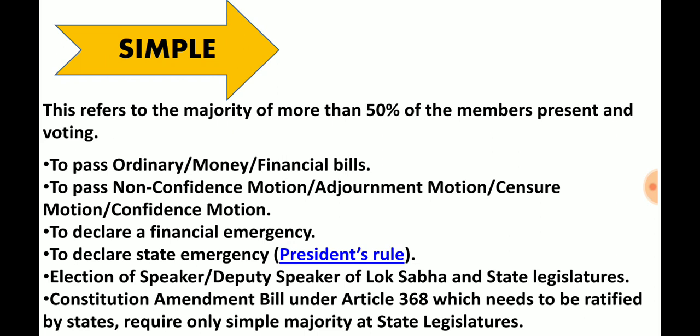Next is Simple majority. Again using a classroom example: out of 200 people, 180 are present. 50% of 180 is 90. So simple majority means more than 90 — that is, 91. This is the simple majority.